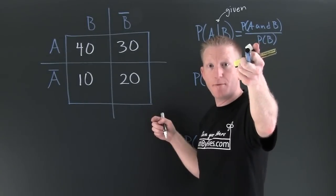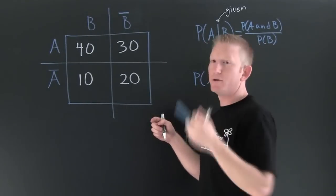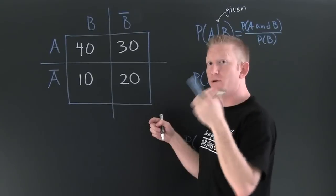This video is finding the conditional probability given a table. A two-way table, some books would call it.